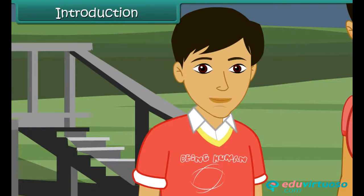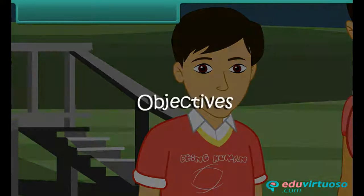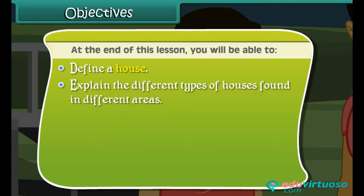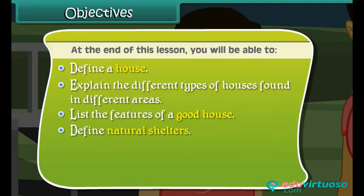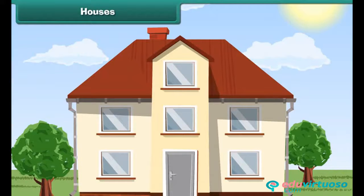Hrithik is eager to learn more about the different types of houses found in the world. Let us discuss houses in detail. At the end of this lesson, you'll be able to define a house, explain the different types of houses found in different areas, list the features of a good house, define natural shelters, define sanitation, and explain the importance of sanitation and safety of a house.